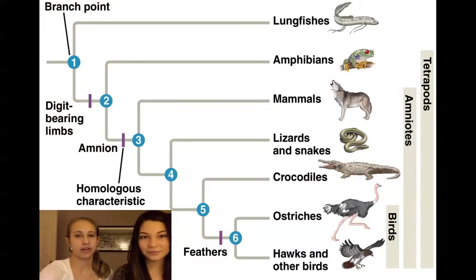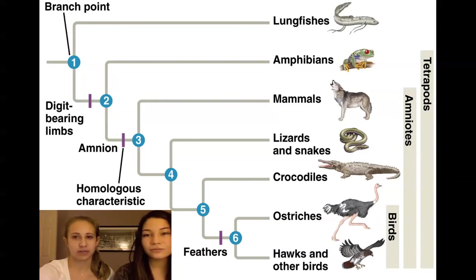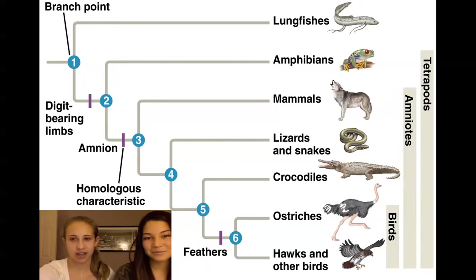This diagram shows how an evolutionary tree works. The different branch points show common ancestors where different species divided. The purple lines that are labeled show homologous characteristics shared by a group of species, and the lines on the right-hand side show the different groups of organisms that developed.